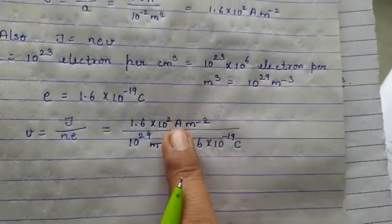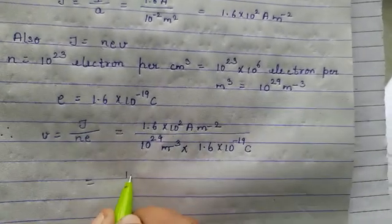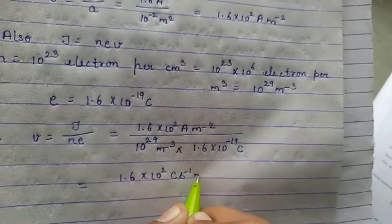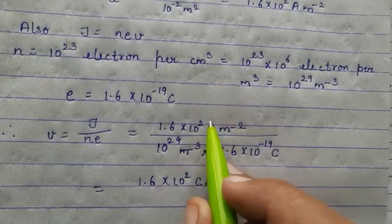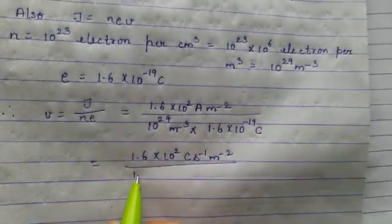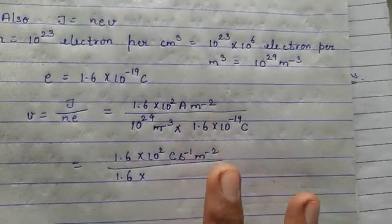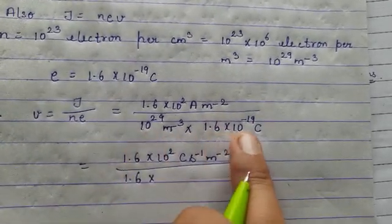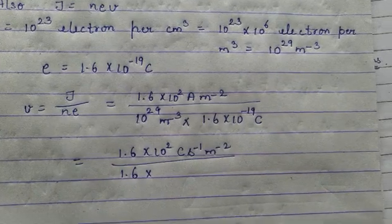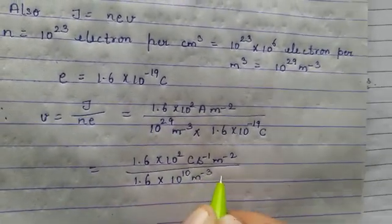Now we know that ampere equals coulomb per second, so we break the unit. The numerator becomes 1.6 into 10 raised to power 2 coulomb per second per meter square. In the denominator, we have 1.6 as it is. Since the bases are the same, 10 raised to power 29 into 10 raised to power minus 19 gives 29 minus 19 equals 10, so we write 10 raised to power 10 per meter cube into coulomb.